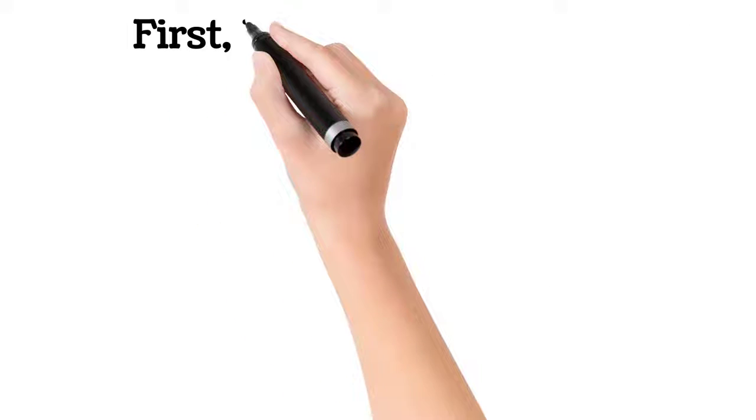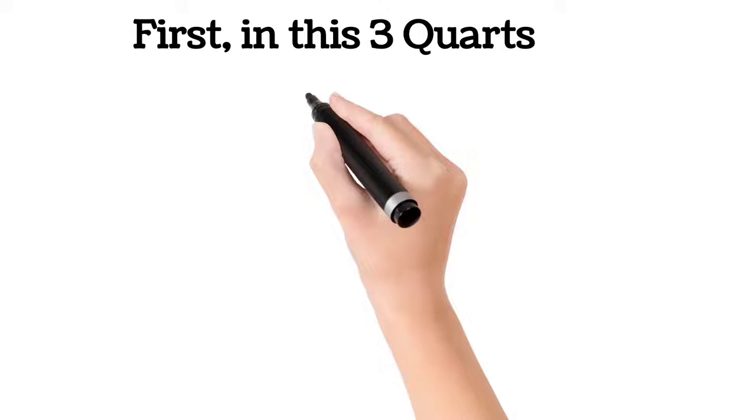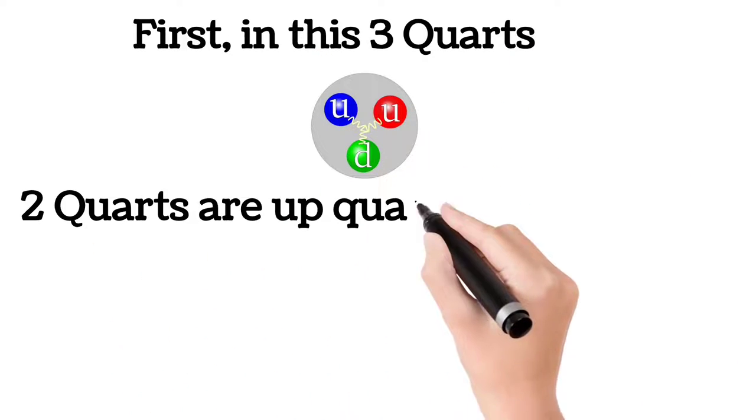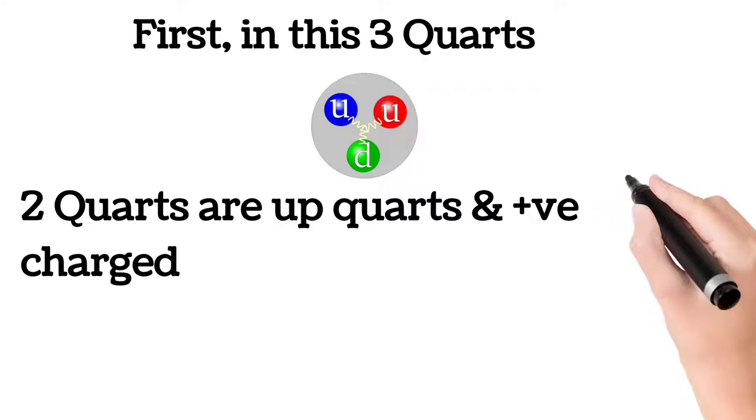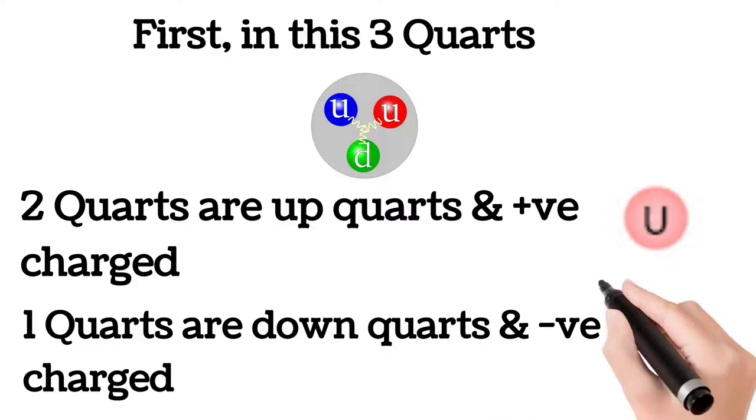The three quark particles consist of two up quarks with positive charge and one down quark with negative charge.